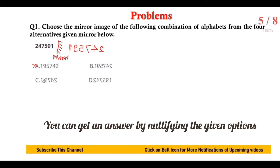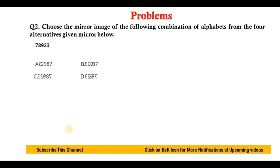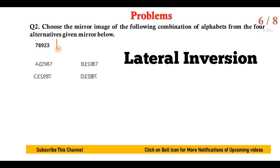Now among the options: option A is not correct because it does not give the proper mirror image. Option C is close but 9 is showing the water image instead of mirror image, so it is wrong. Option D is wrong because the last letter is shown at the last position instead of first. So option B is correct — it shows the correct reflected image of 2 4 7 5 9 1.